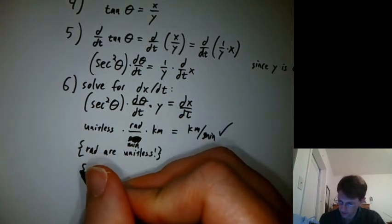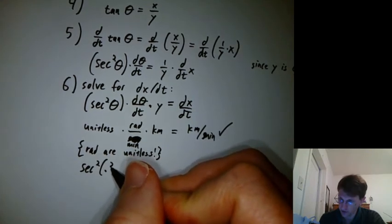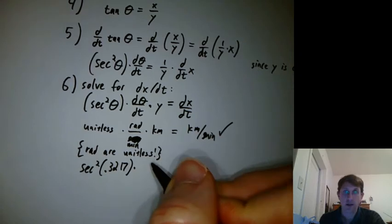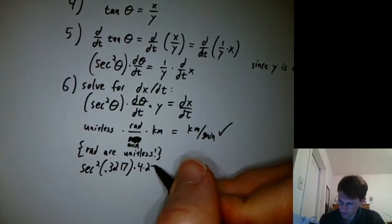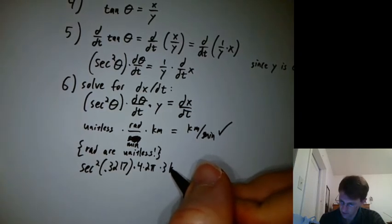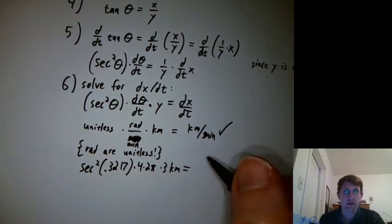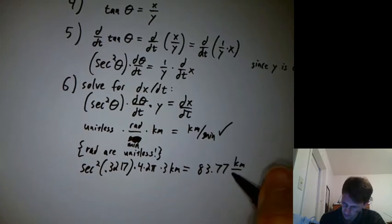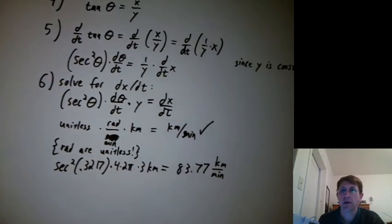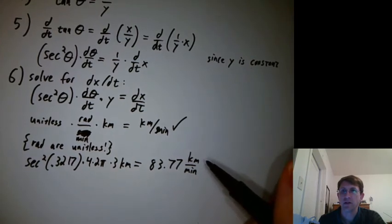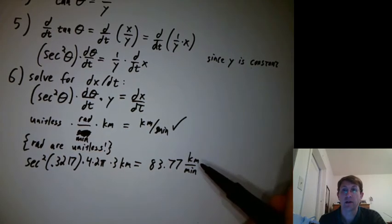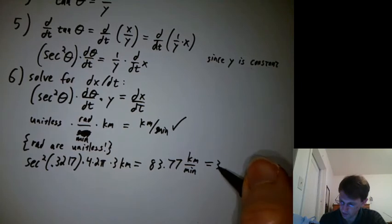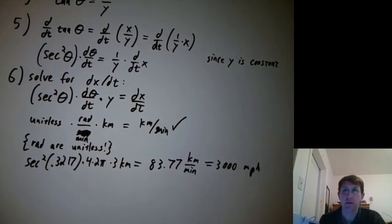So then we're going to do secant squared of 0.3217 radians times 4 times 2 pi radians per minute times 3 kilometers. And you do all that, and you get 83.77 kilometers per minute. And is that fast or slow? Well, driving is usually 100 kilometers, like driving 60 miles an hour on the freeway is 100 kilometers per hour. This is kilometers per minute. If you do the conversion, that's like 3,000 miles per hour. So I don't think you could keep up with it. I mean, I couldn't. Maybe you could.